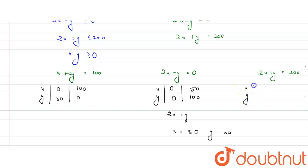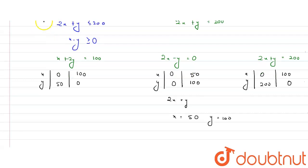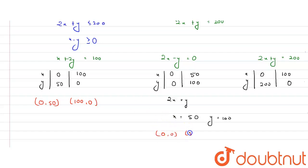For Equation 3 (2x + y = 200): putting x = 0 gives y = 200, and putting y = 0 gives x = 100. So all coordinates are: Equation 1 — (0, 50) and (100, 0); Equation 2 — (0, 0) and (50, 100); Equation 3 — (0, 200) and (100, 0).